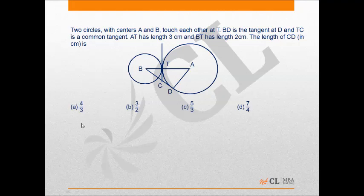If we look at this question, it is a level 2 question. It states that two circles with centers A and B touch each other at T, BD is the tangent at D, TC is a common tangent, AT has length 3 cm and BT has length 2 cm. We need to find the length of CD.